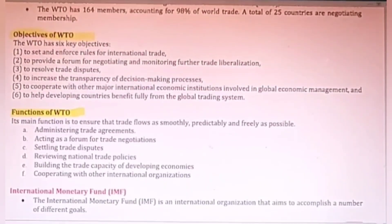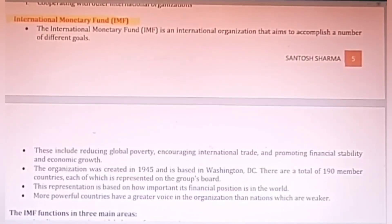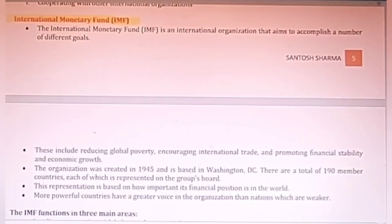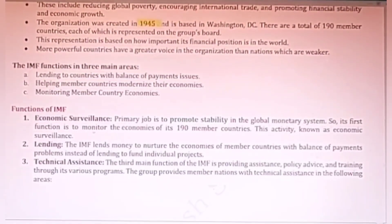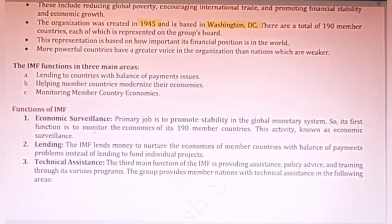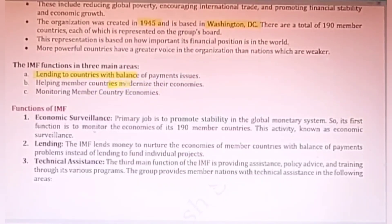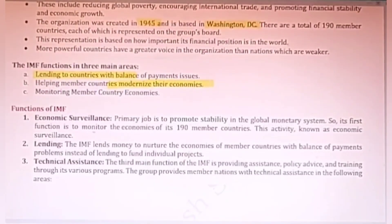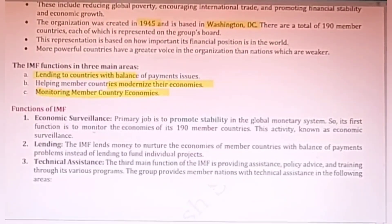Another institution which plays a very important role in international trade is the IMF — International Monetary Fund. As the name implies, it is a type of bank which provides financial facilities to developing and poor countries. This organization was created in 1945, its headquarters are in Washington DC, and there are currently 200-plus member countries. Its main functions are to give loans to countries, develop production facilities by providing infrastructure, and monitor member countries.